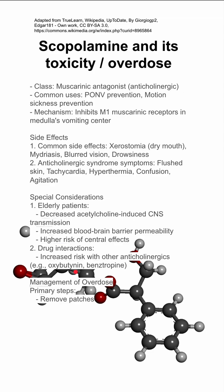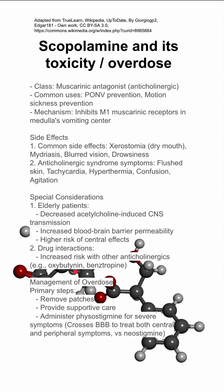For management of overdose, the primary step is to remove the patches and provide supportive care. You can give physostigmine for severe symptoms. Physostigmine works well because it crosses the blood-brain barrier to treat both central and peripheral symptoms, in comparison to neostigmine or pyridostigmine, which would not cross the blood-brain barrier.